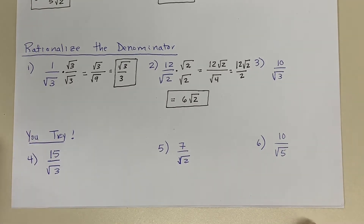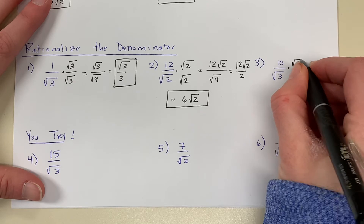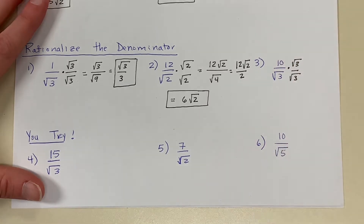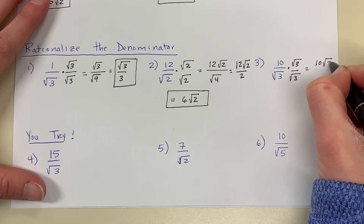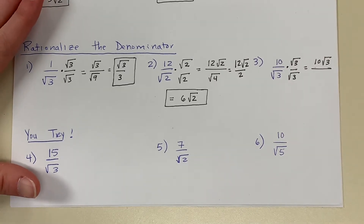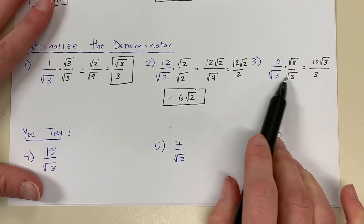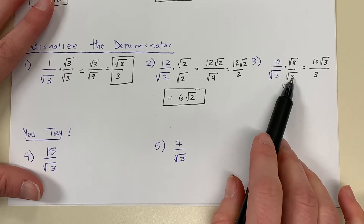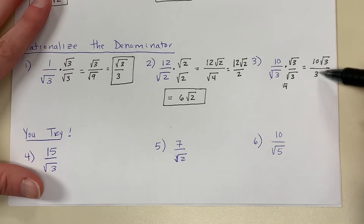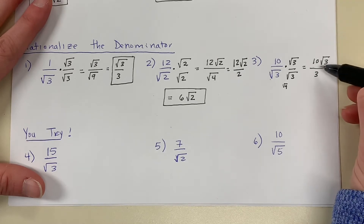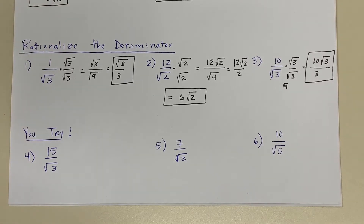Problem number 3: 10 divided by radical 3. I cannot have a square root in my denominator, so I'm going to rationalize. Multiply the numerator and the denominator by radical 3 — we multiply straight across. 10 times radical 3 is 10 radical 3. Radical 3 times radical 3 is the square root of 9, and the square root of 9 is 3. Notice: when you multiply two radicals with the same number underneath, your final answer is just that number. Now I have 10 and 3 outside of the radical, but I cannot divide 10 by 3 to get a whole number, so my final simplified answer is 10 radical 3 divided by 3.